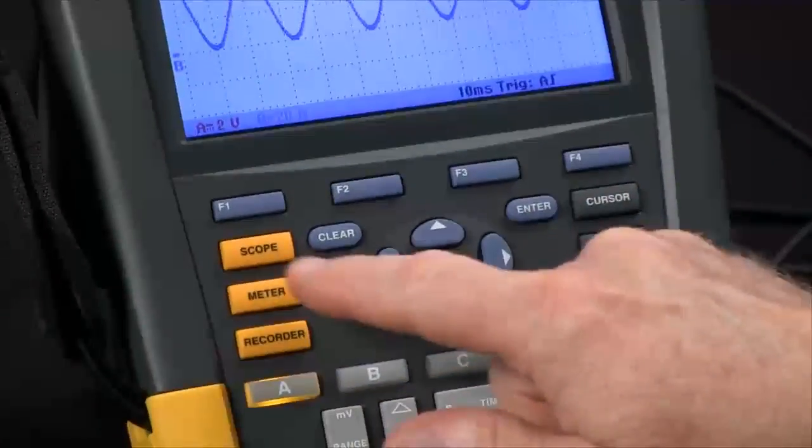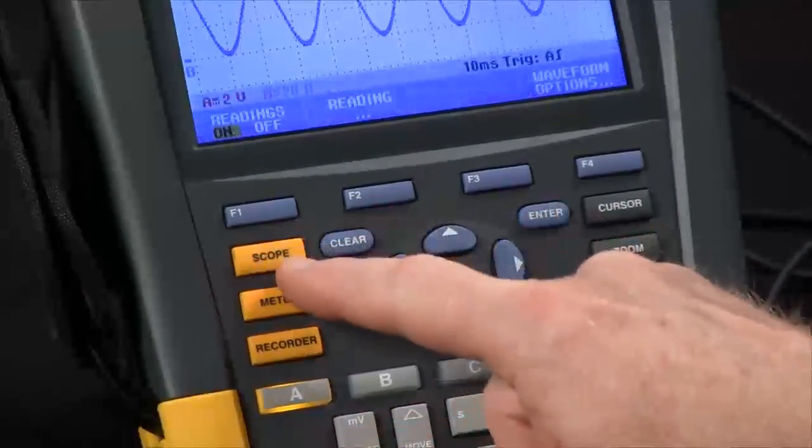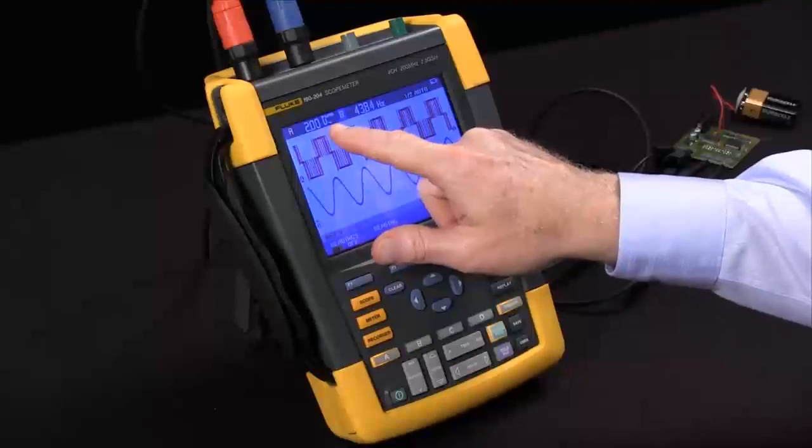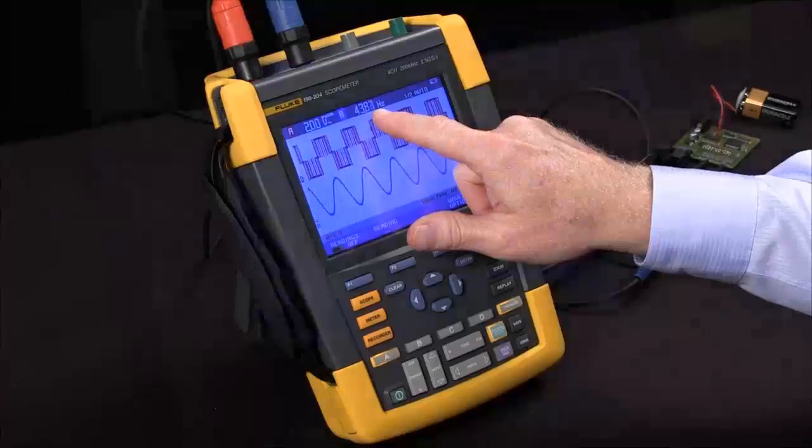We're going to start out by selecting some readings. We'll hit the scope button. Our readings are already turned on. We can see channel A set for volts PWM and channel B for frequency.